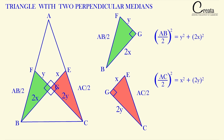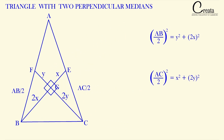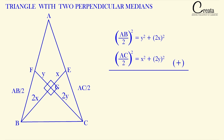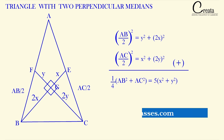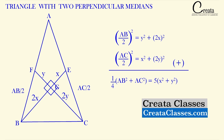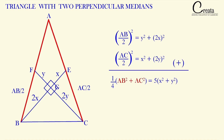We now have two relations. Adding them: (1/4)(AB² + AC²) = 5X² + 5Y², which simplifies to (1/4)(AB² + AC²) = 5(X² + Y²). Our relation contains AB and AC, and X and Y represent EG and FG, so we need to replace X² + Y² with the sides of the triangle.